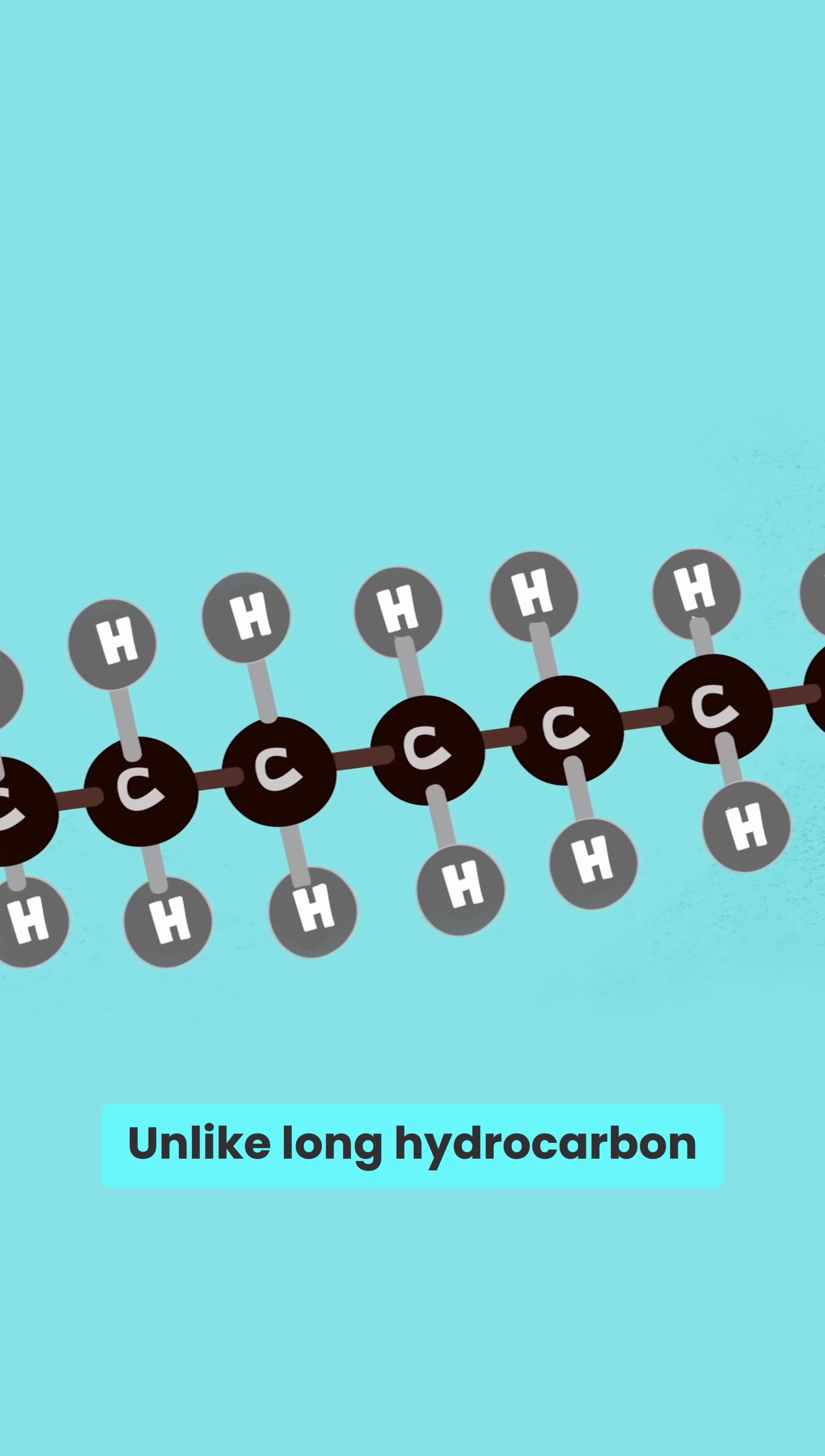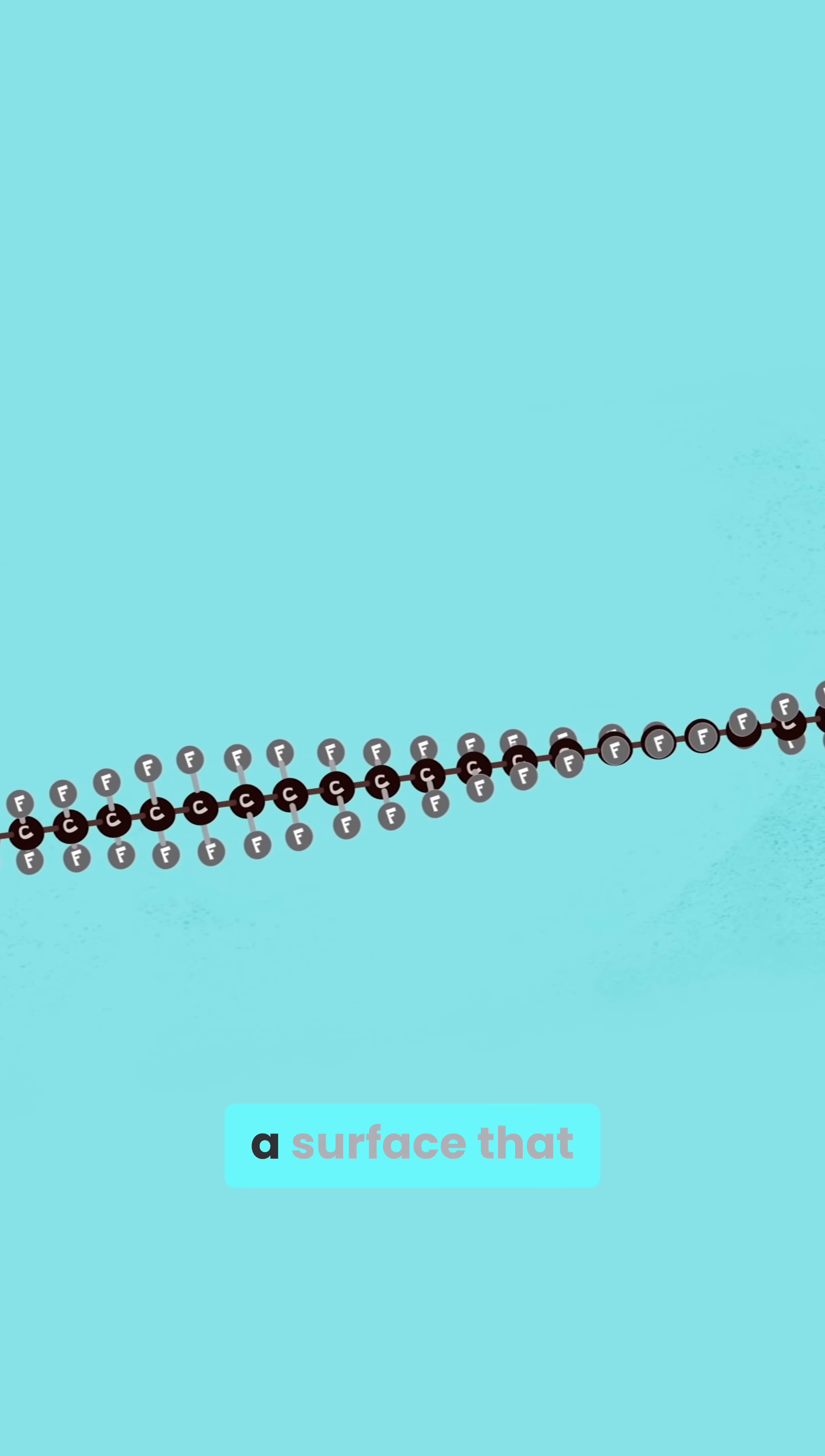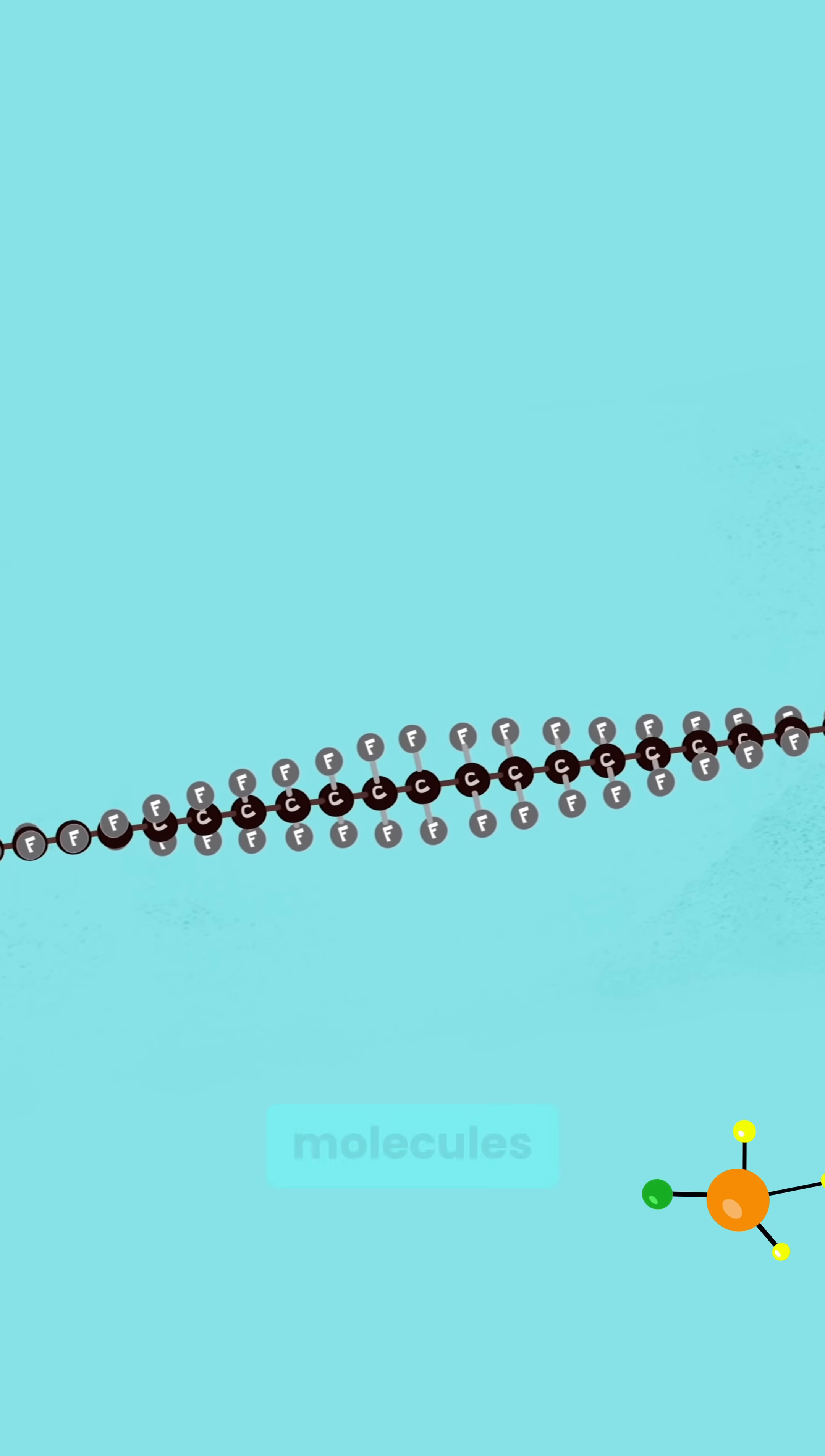Unlike long hydrocarbon chains found in fats, Teflon's carbon backbone is not covered by hydrogen, but fluorine atoms. Thanks to fluorine's unique properties, this creates a surface that refuses to interact with any other molecules.